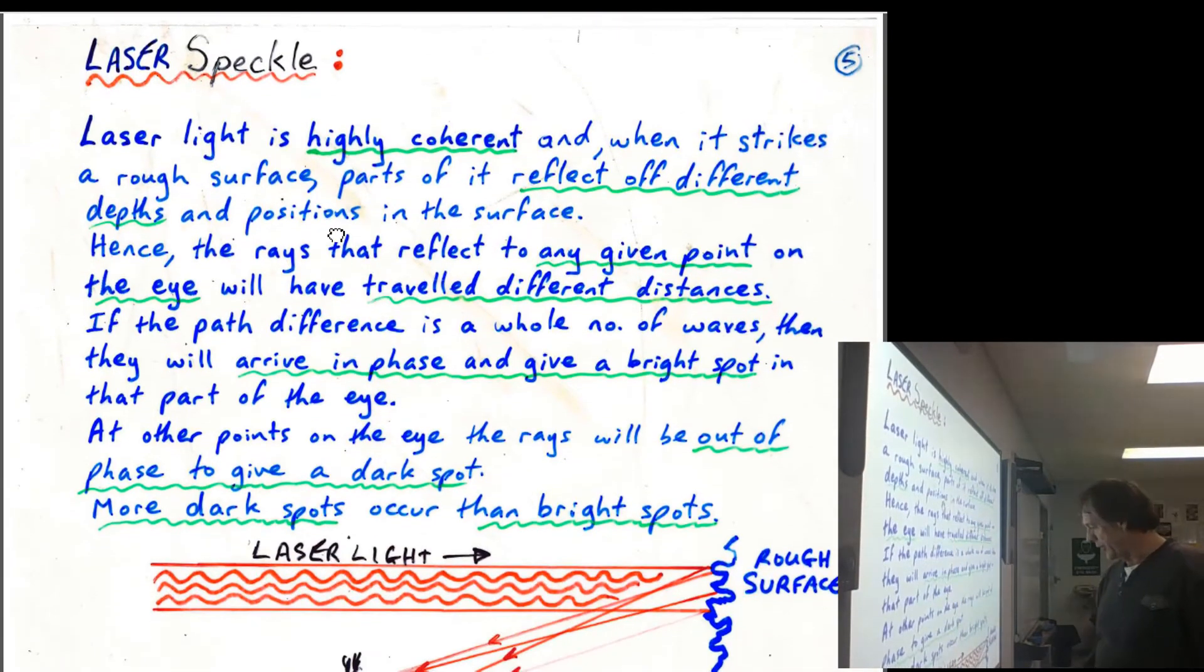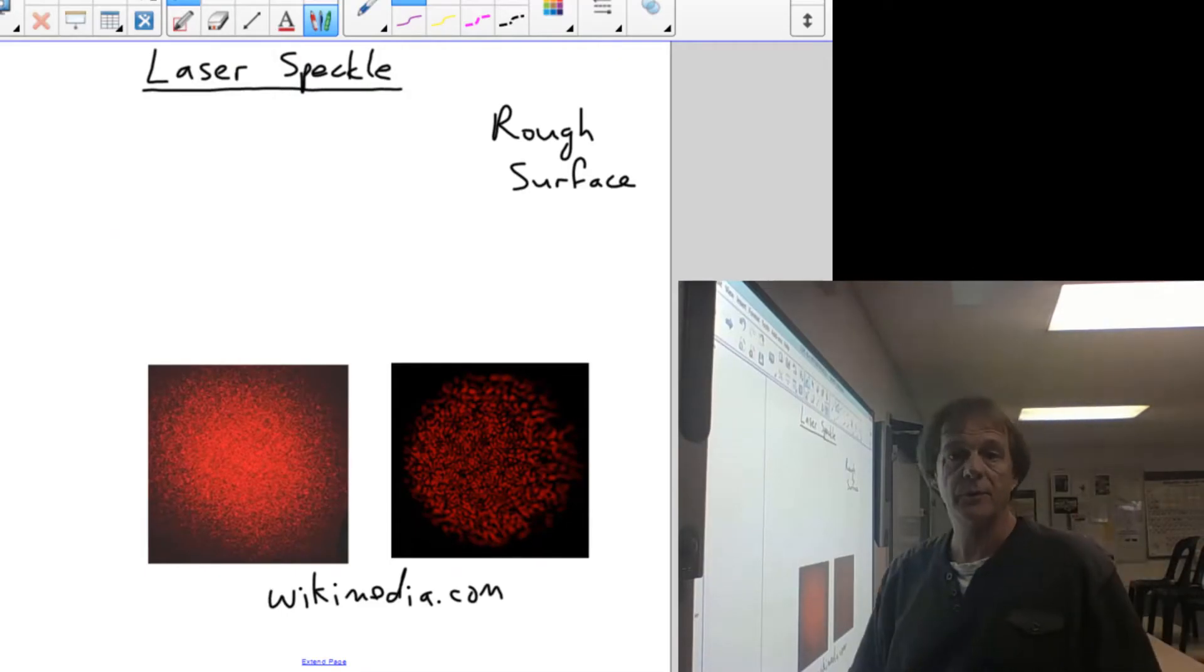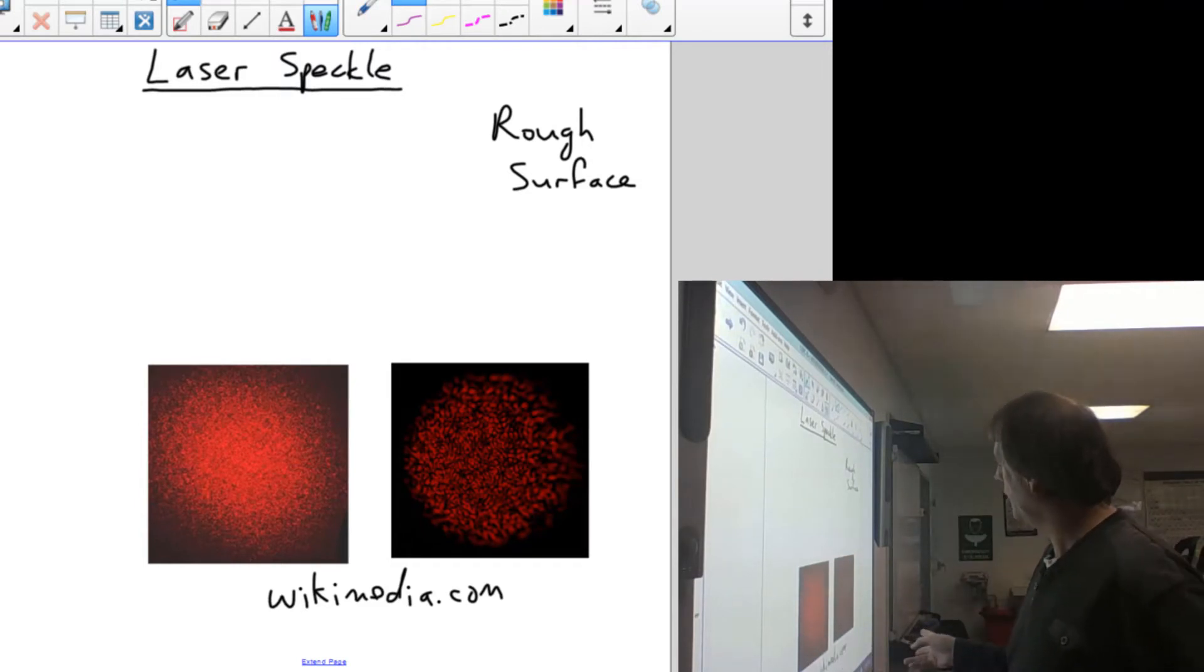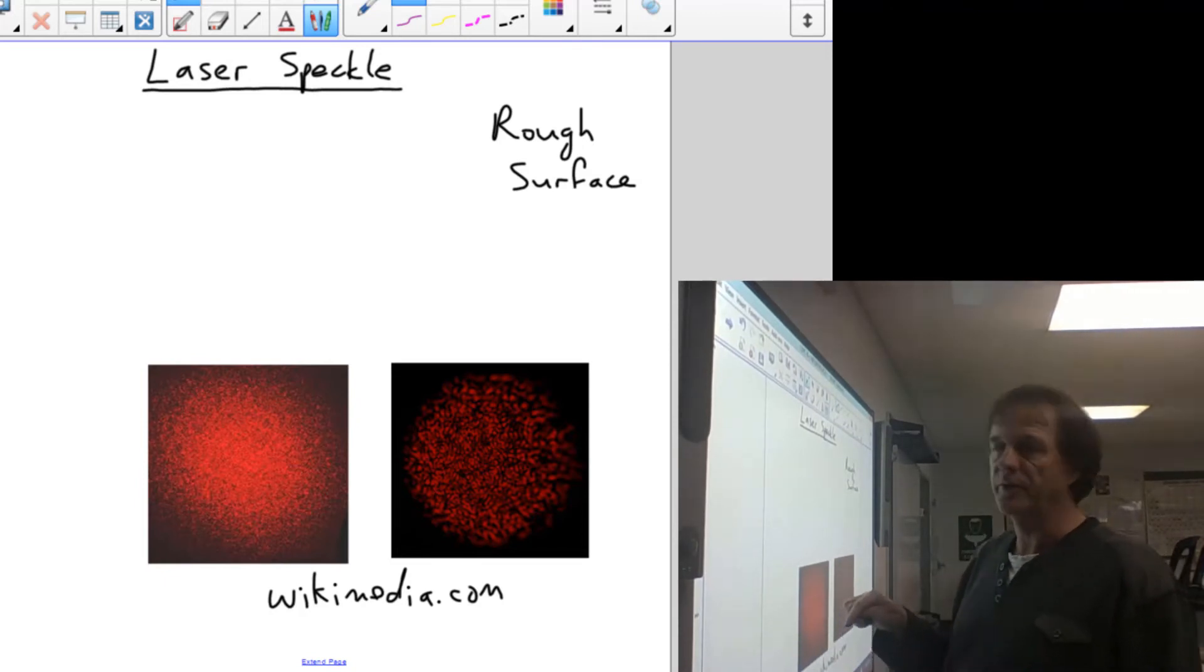Now what we're looking at today is laser speckle though. And I tried to show you that phenomenon in the dark and it just didn't work. It's just too low resolution on the camera. So it's a picture that would look like this. This is from wikimedia.com. You get a speckle pattern or a mottled pattern of red and black dots.